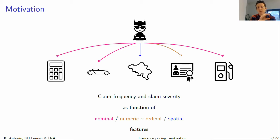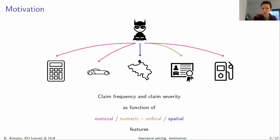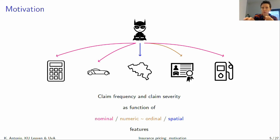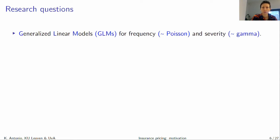On the other hand, with numeric or ordinal information, there is a specific ordering in the values the variable can take. Think about age — ordering from young to old — or years with a driver's license, from very new to very senior and experienced drivers. The last type is spatial information, where there is a specific topology in postal codes. The whole idea is how to use these different pieces of information cleverly to construct data-driven groups representing similar risks.